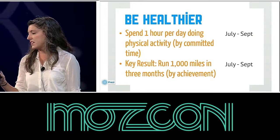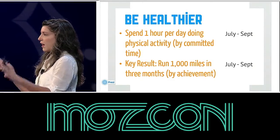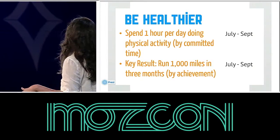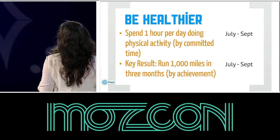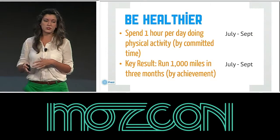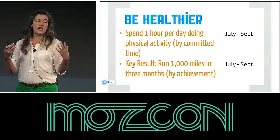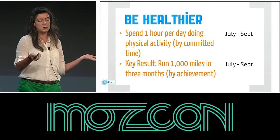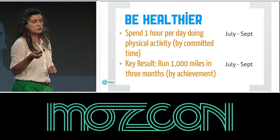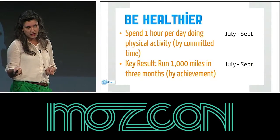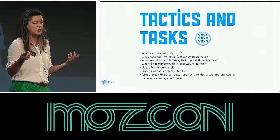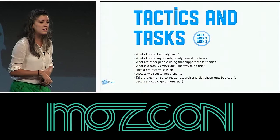You can also set objectives by hours of time that you want to commit. So if it's like be healthier, you're going to spend an hour a day doing physical activity — just say spend an hour a day. And you can also do it by a particular accomplishment, like run a thousand miles in three months or something like that.